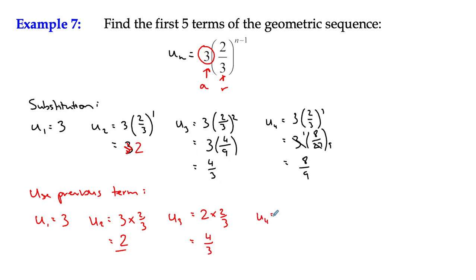U4 is the previous term, four thirds multiplied by two thirds, which is eight ninths, which we agreed. And u5 is the previous term, u4 multiplied by two thirds, which is 16 over 27. Okay, now find the first five terms.